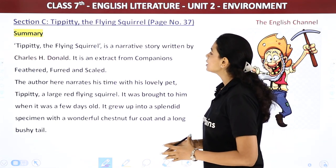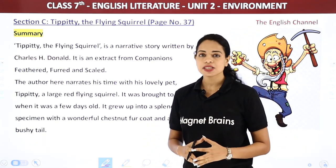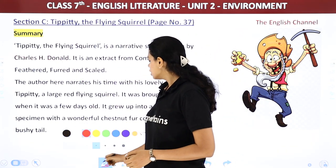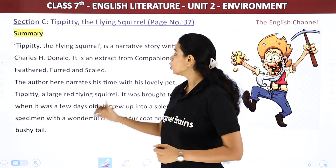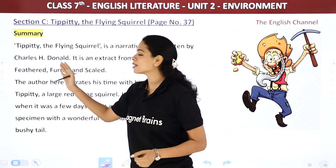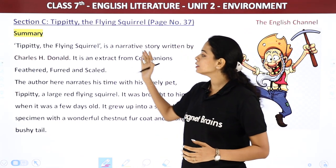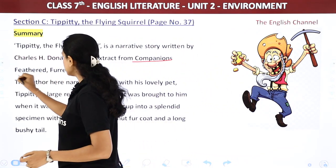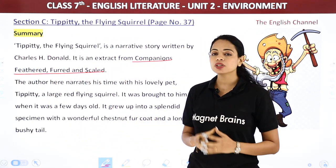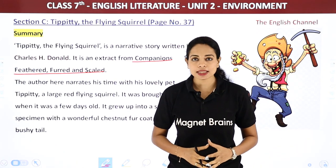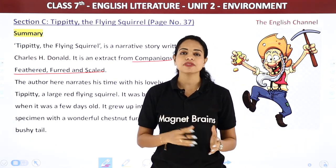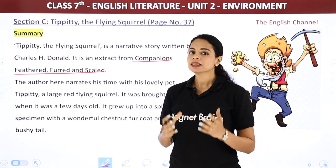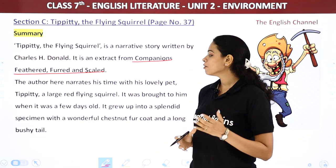Tippity the Flying Squirrel is a narrative story written by Charles H. Donald. It is an extract from 'Companions, Feathered, Furred and Scaled.' This is the actual book from which a small extract has been taken, named Tippity the Flying Squirrel. The author here narrates his time with his lovely pet Tippity, a large red flying squirrel.